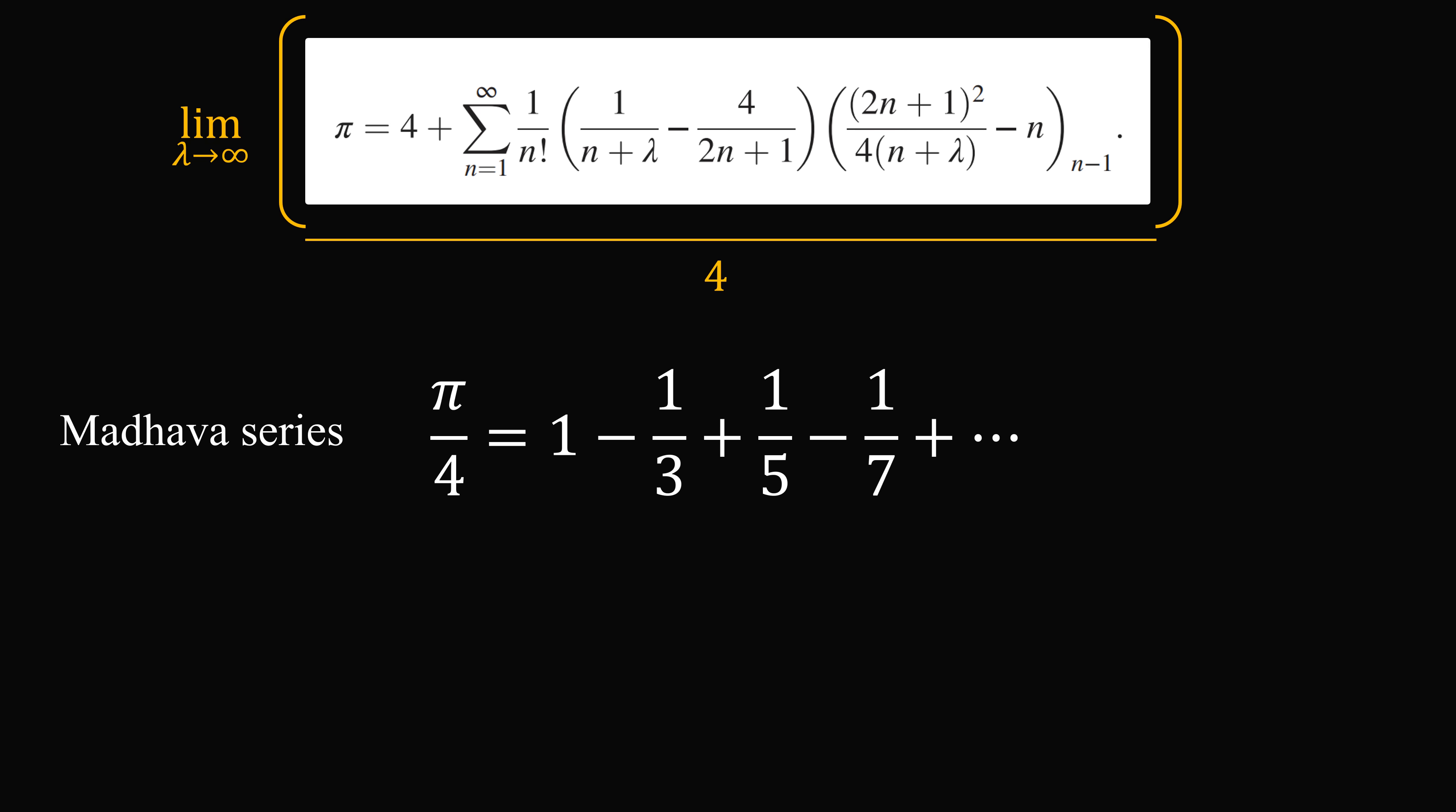you end up with the Madhava series for pi. Pi over 4 is equal to 1 minus 1 over 3 plus 1 over 5 minus 1 over 7, and so on. The Madhava series in its basic form like this is unfortunately not a good way to compute pi. It takes 5 billion terms of computation just to get 10 digits of pi correct.